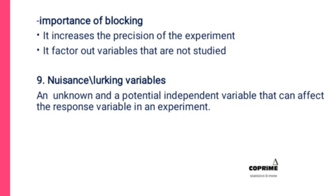The cousin of a blocking variable is the nuisance or lurking variable. The key difference is that a nuisance variable is unknown, whereas a blocking variable is known. A nuisance variable is an unknown and potential independent variable that has the tendency to affect the response variable. The only thing differentiating them is that a nuisance variable is unknown but a blocking variable is known.